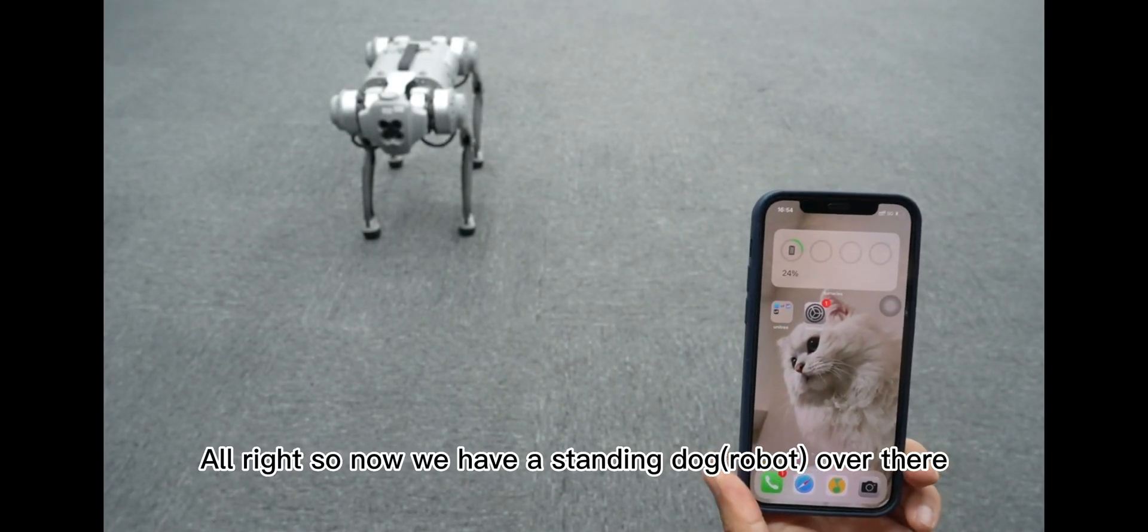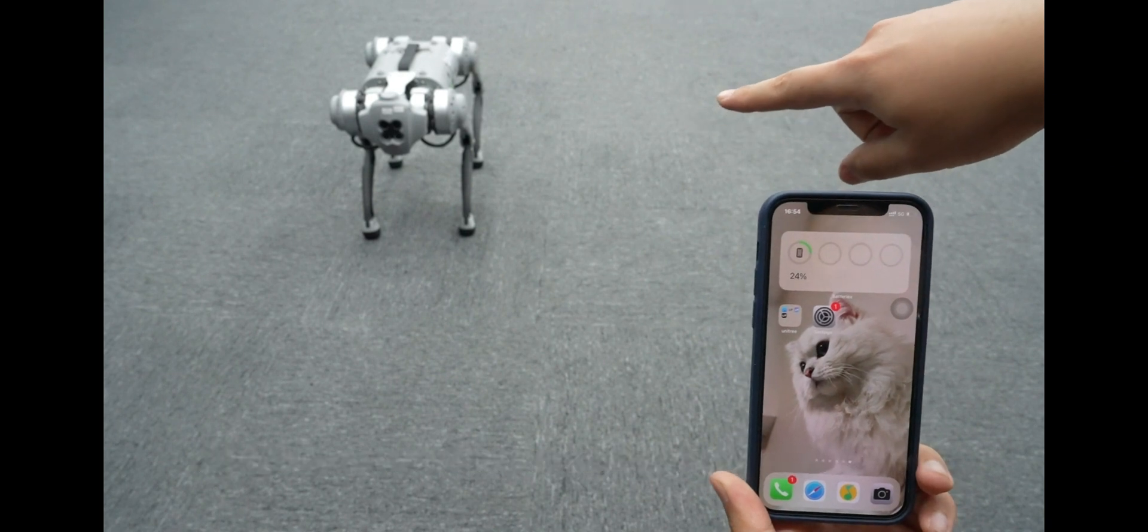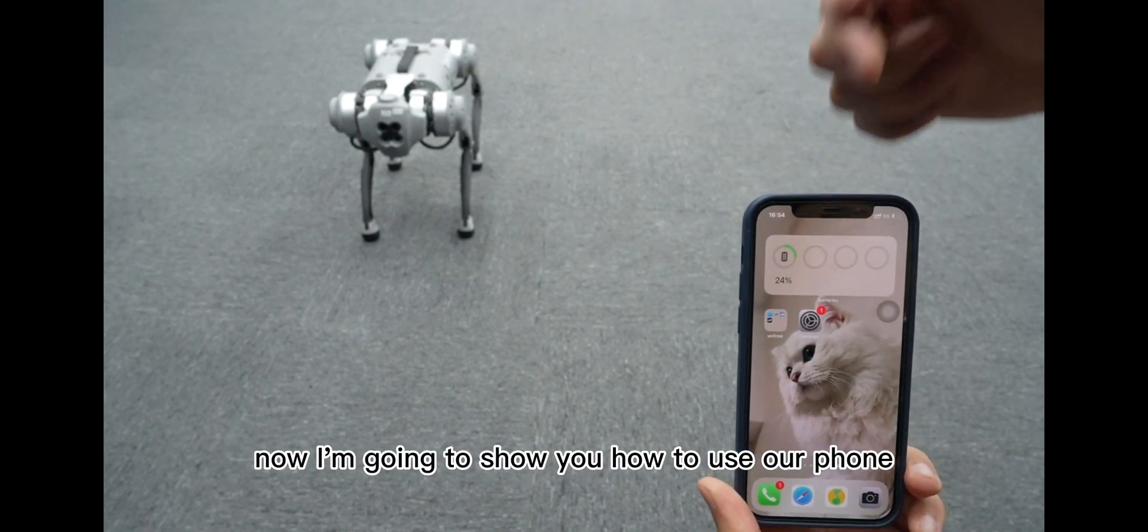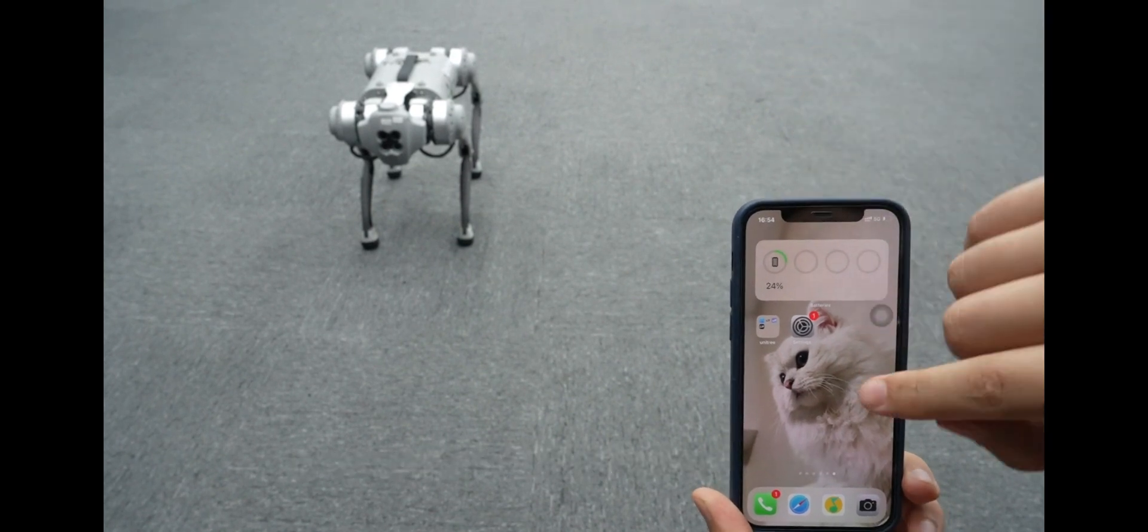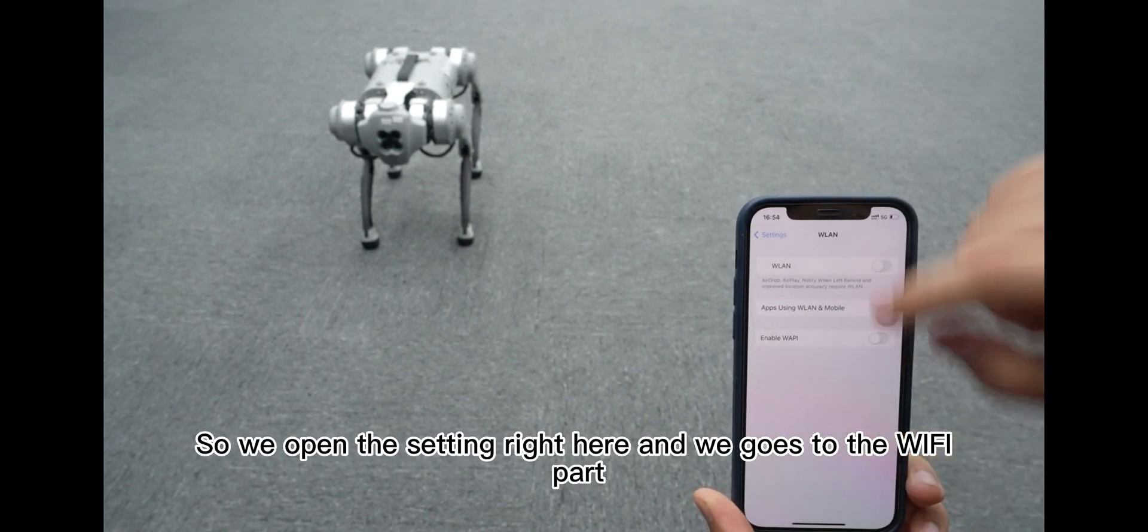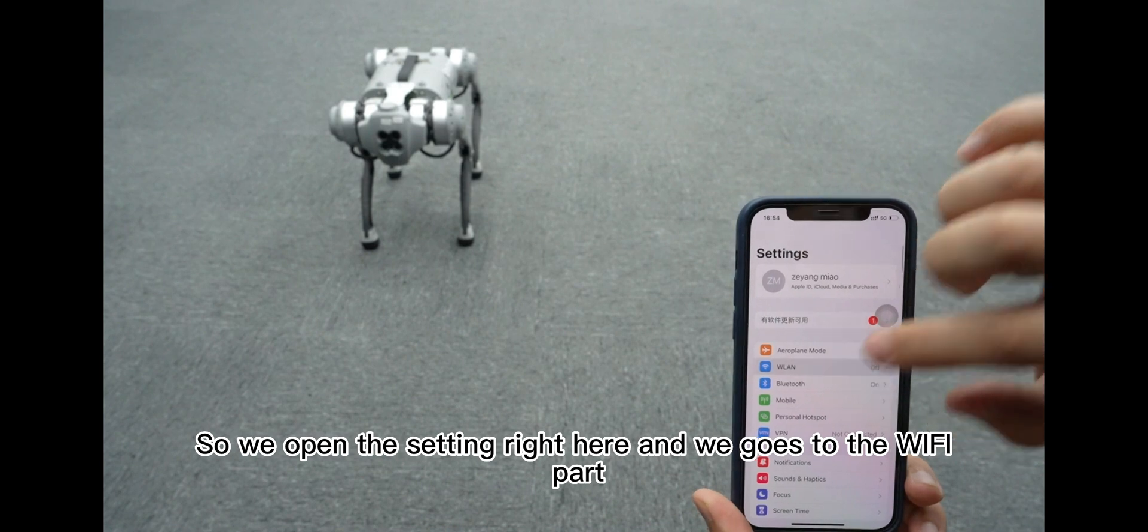Alright, so now we have a standing dog over there. Now I'm going to show you how to use our phone to connect the WiFi, the dog carrying. So we open the setting right here, and we go to the WiFi part.